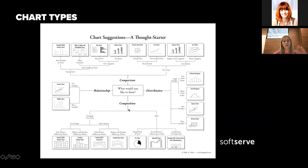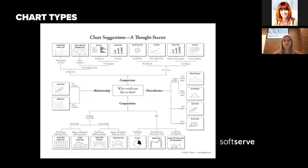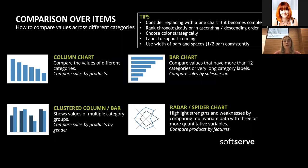For relationships, you might want to see how revenue relates to quantity of items sold — for example with two variables like revenue and quantity. It's also possible to visualize three variables in a bubble chart. For comparison over items, the best charts include column chart, clustered column chart, bar chart, and spider chart.